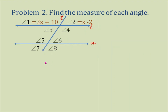Now, problem number 2: find the measure of each angle. We have angles 1, 2, 3, 4, 5, 6, 7, and 8. Angle 1 is equal to 3x + 10, while angle 2 is equal to x − 2. What are the measures of these 8 angles?